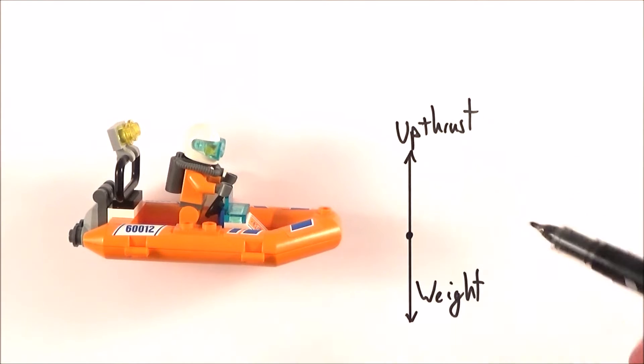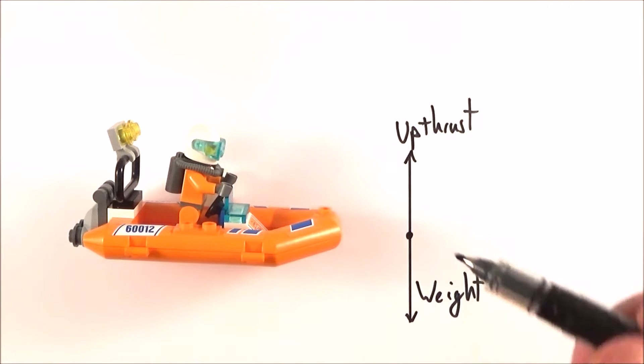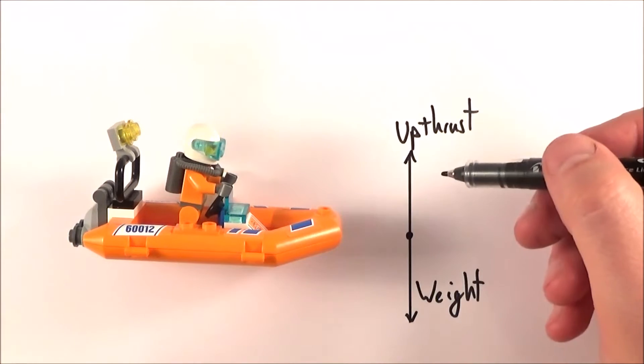Here we have a free body diagram for maybe a boat which is just bobbing up and down in the water. Again, we've got the weight force acting down, and we have the upthrust which is stopping it sinking in the water. If it's just floating, the upthrust is going to be equal to the weight.